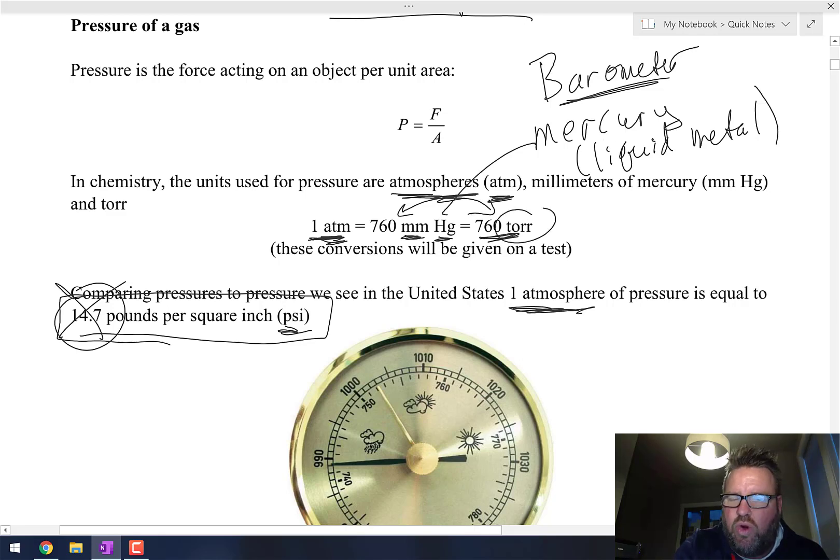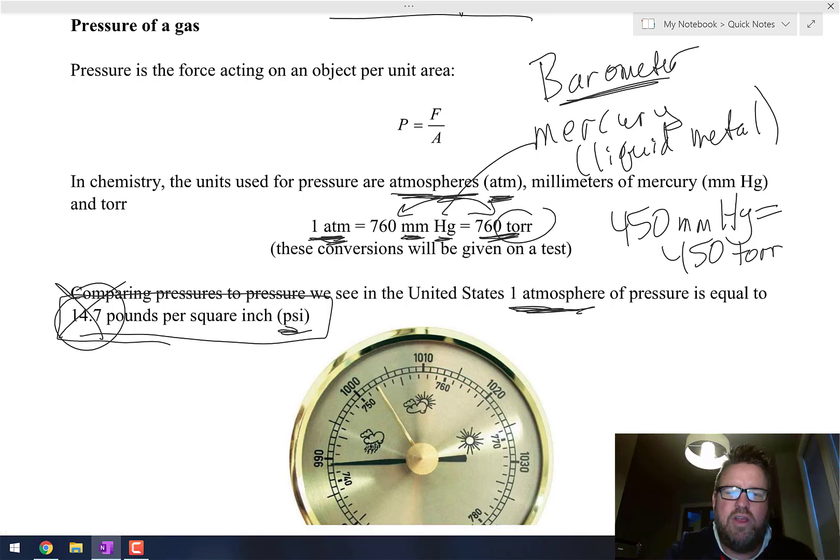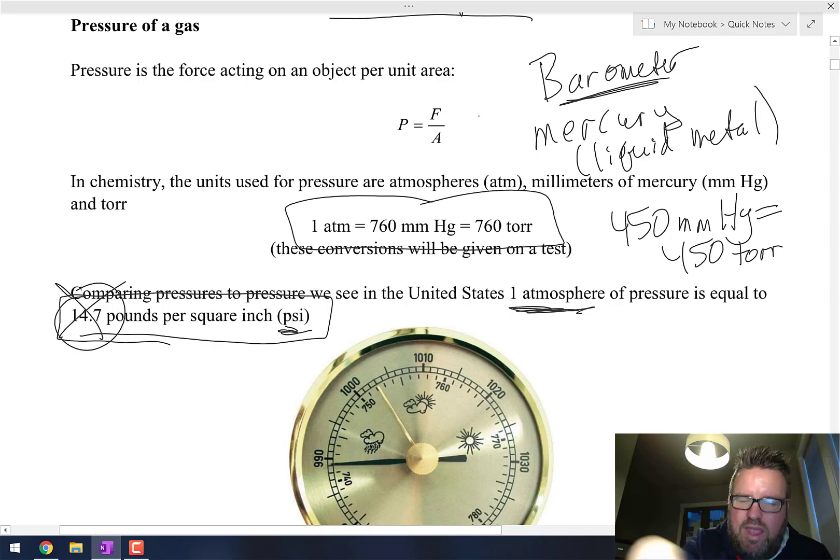A less common one, but also notice that it uses the same conversion as millimeters of mercury, is what's called torr. So if something has a pressure of 450 millimeters of mercury, it has a pressure of 450 torr. Why the difference? Those are just three very common different pressure units that we're going to use and convert between in this class.